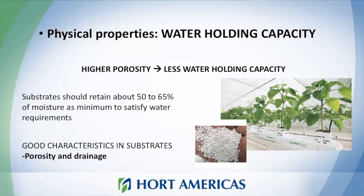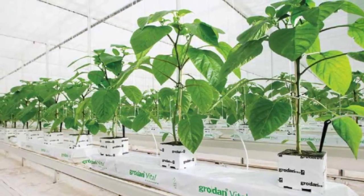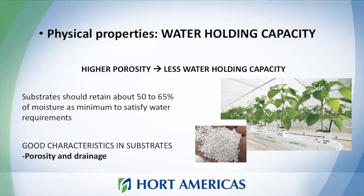If we compare high porosity substrates with other systems — for example, drip irrigation — usually in a drip irrigation system we need a substrate that holds more water. You always need to check which system you are using and what the water demands of that system are. Usually the substrate should retain about 50 to 65 percent of moisture as a minimum to satisfy the water requirements of your plant. Also take into account the hydroponic system you're using to determine whether you need a substrate that retains water or one that provides better drainage.